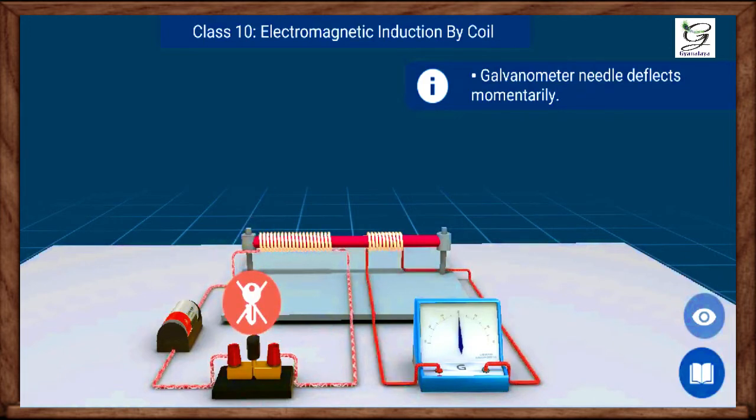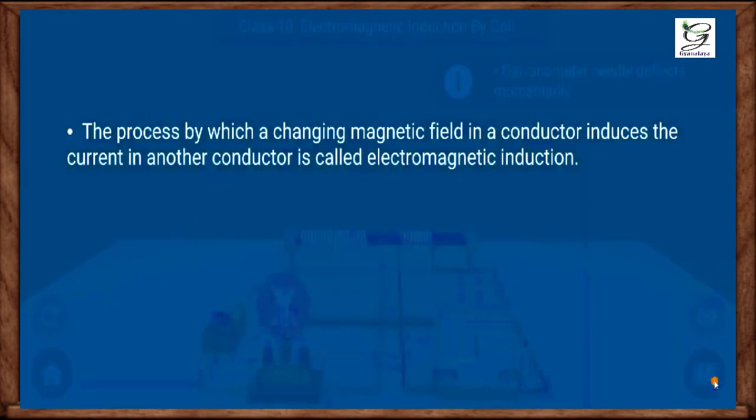We have observed that a potential difference is induced in the secondary coil whenever the electric current through the primary coil is changing. So we can conclude that the process by which a changing magnetic field in a conductor induces the current in another conductor is called electromagnetic induction.